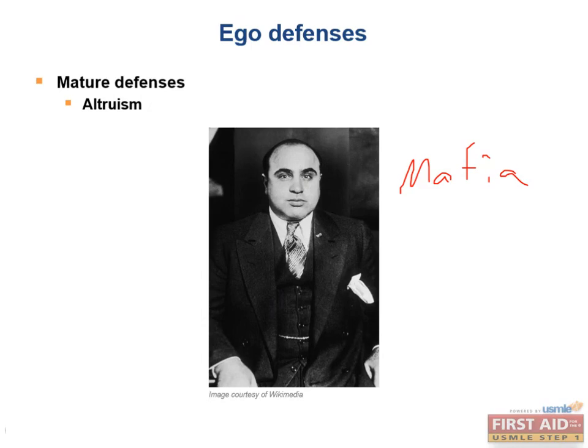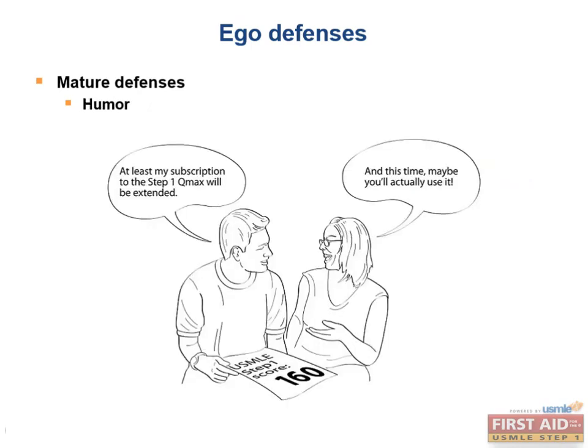The next mature defense mechanism is humor, which involves appreciation of the amusing elements of an anxiety-provoking or adverse situation. Think of a disappointed medical student who cracks a joke about his bad board score.